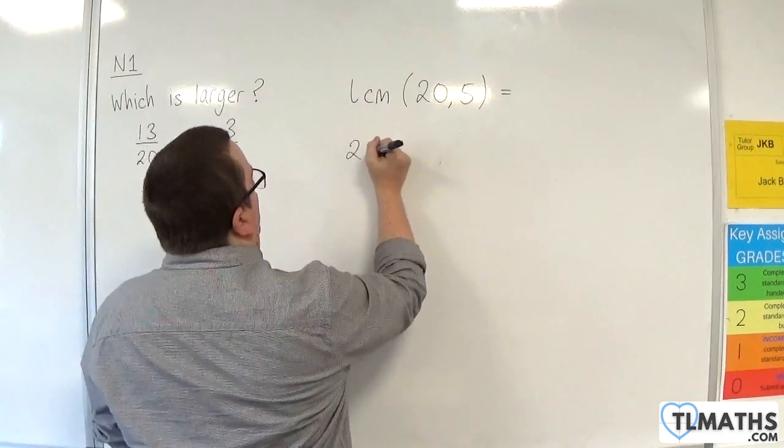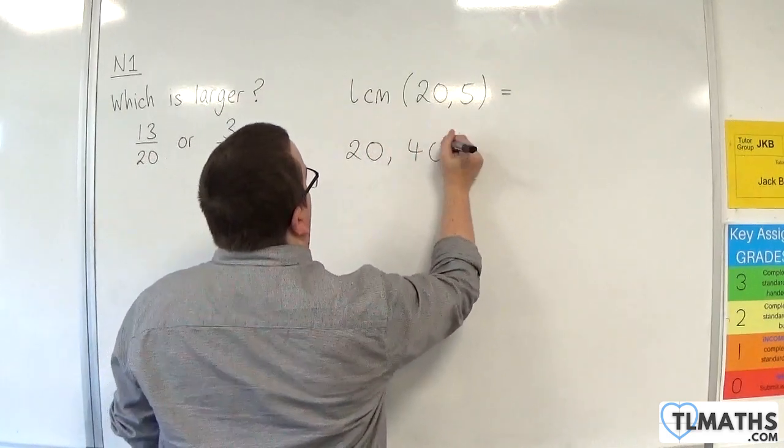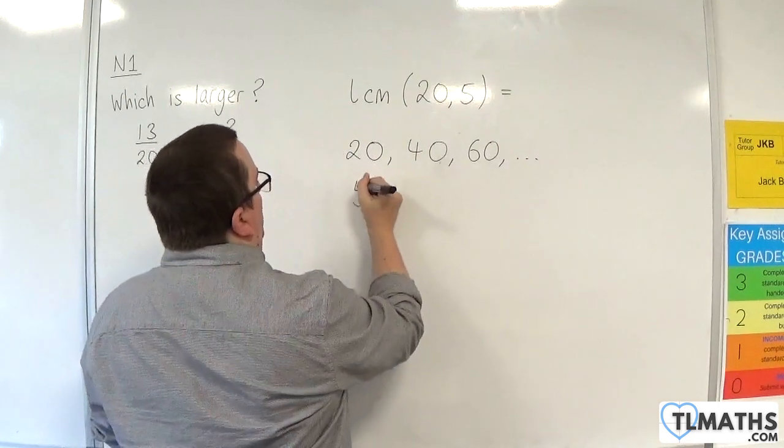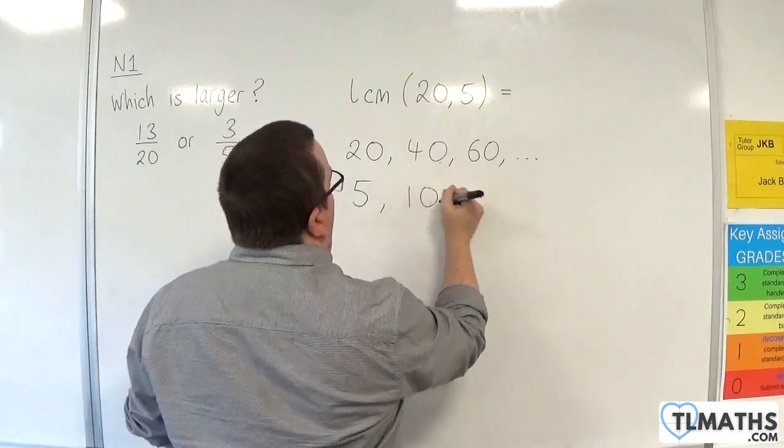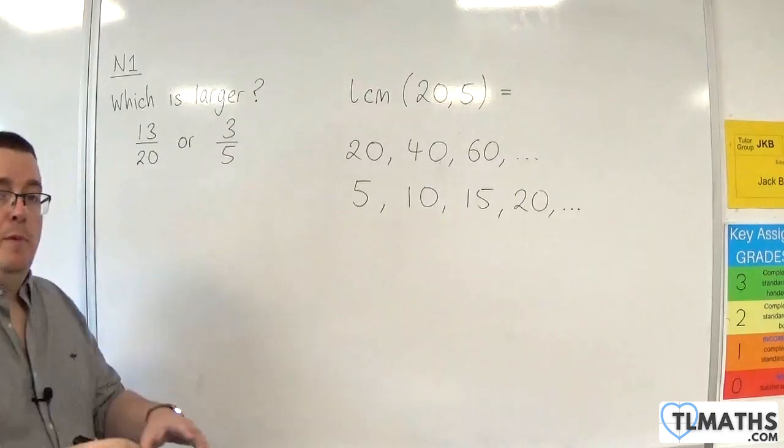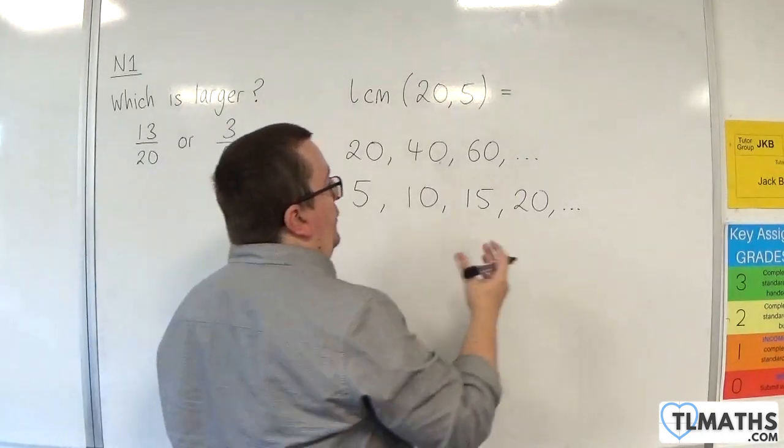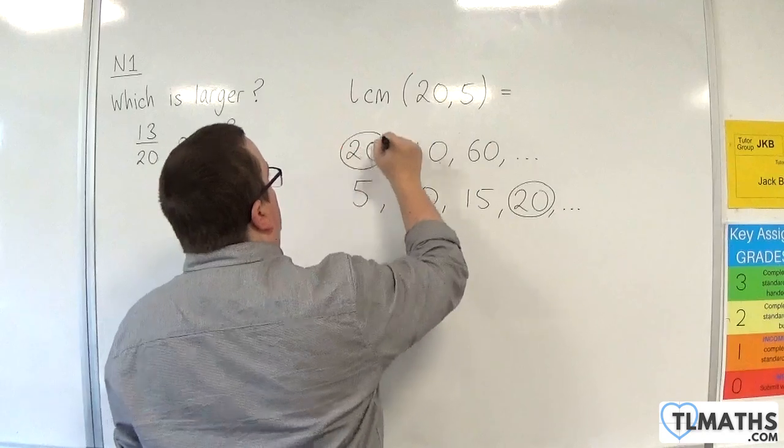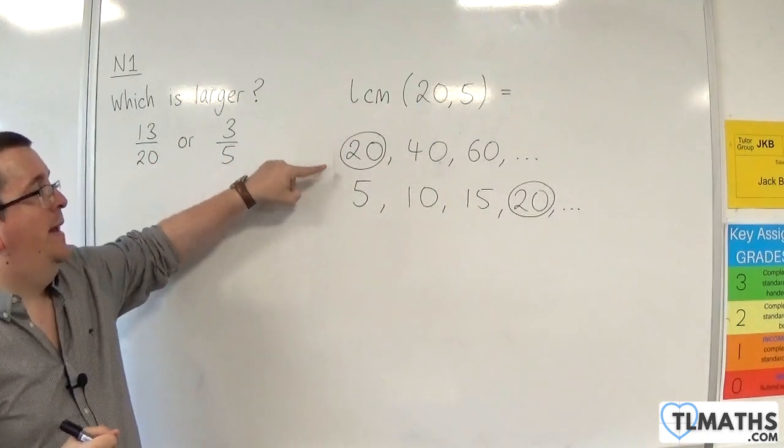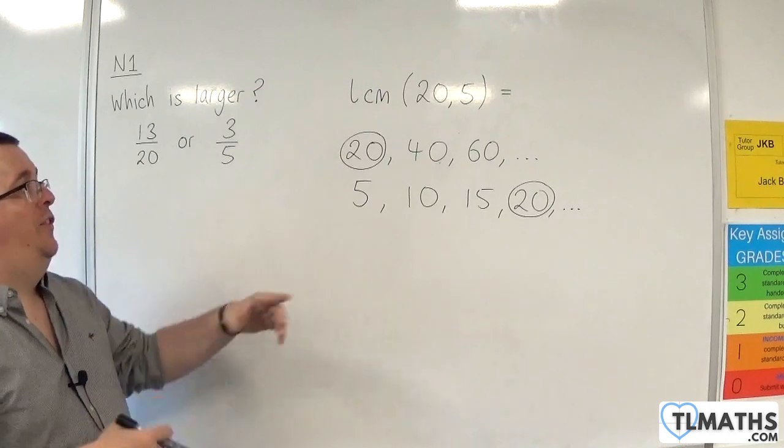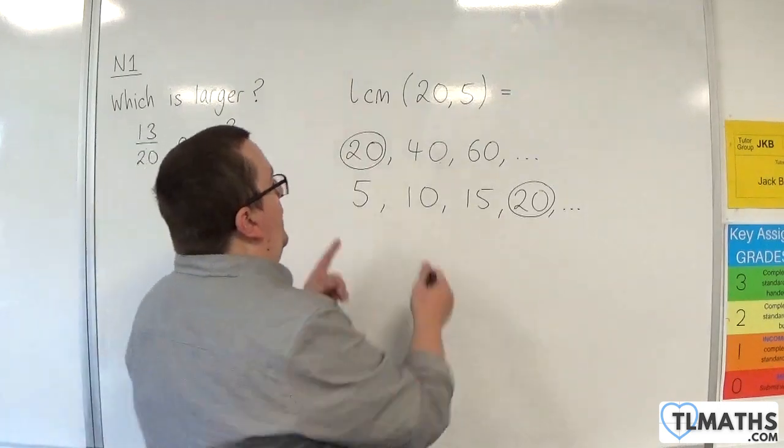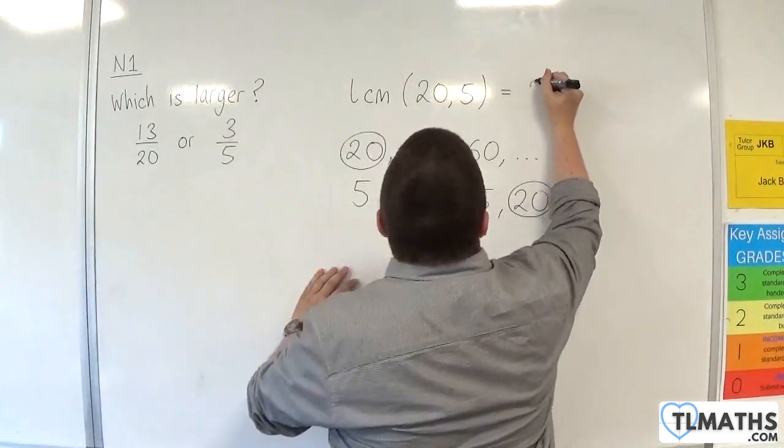So, we write down the multiples of 20. So, I'm just going to write 20, 40, 60. And we write down the multiples of 5. So, 5, 10, 15, 20. And the moment that you get to the same number, so in this case 20, 20 is a multiple of both 20 and 5. And it is the least common multiple, the lowest common multiple, because it is the first one that I've come across. It's the lowest number. And so, it is 20.